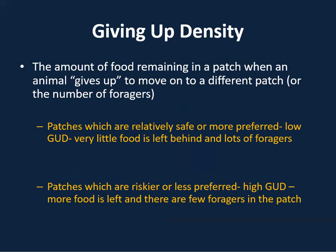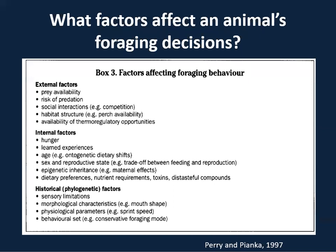Several factors can affect an animal's foraging decisions. External factors include prey availability, risk of predation, social interactions, habitat structure, and the availability of thermoregulatory opportunities. Internal factors include hunger, learned experiences, age, sex, reproductive state, epigenetic inheritance, and dietary preferences. Historical or phylogenetic factors include sensory limitations, morphological characteristics, physiological parameters, and behavioral sets.